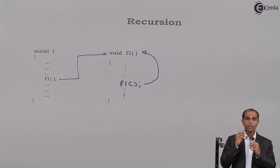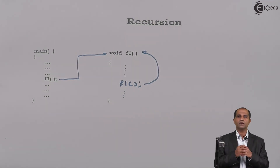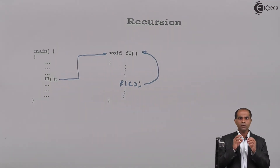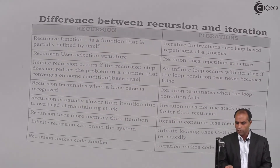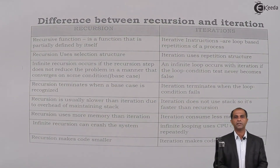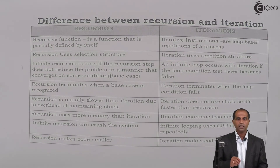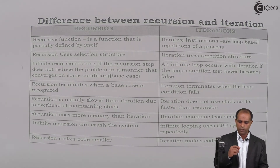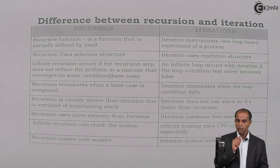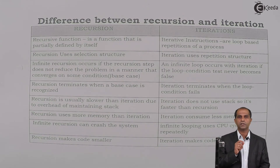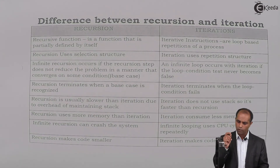But you need to be more logical when recursions are used as an alternate of iterations. Are there more differences between recursion and iterations? Yes. A recursive function is partially defined by itself — it has a definition inside it and a call inside it. Whereas iteration uses loop-based instructions: for loop, while loop, or do-while loop for a repetitive process.